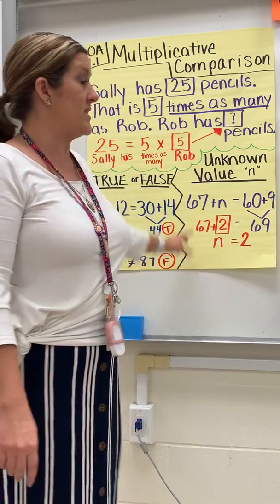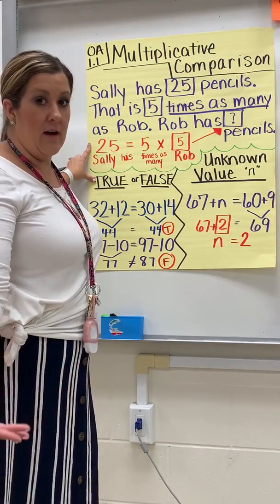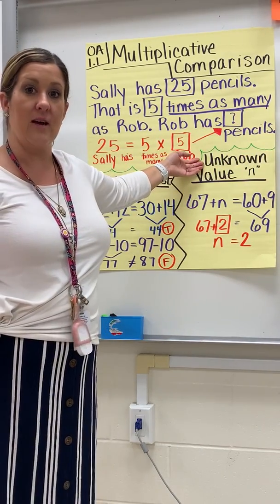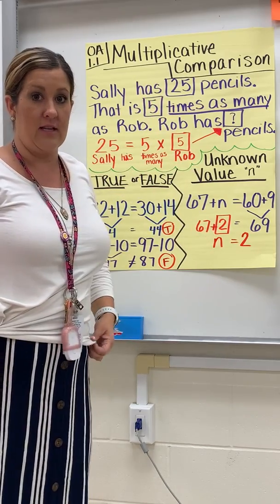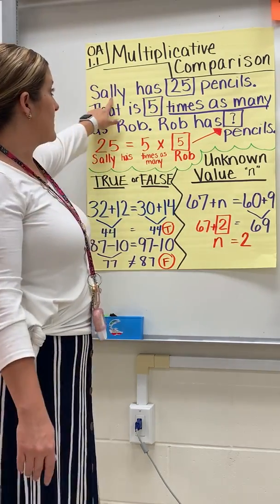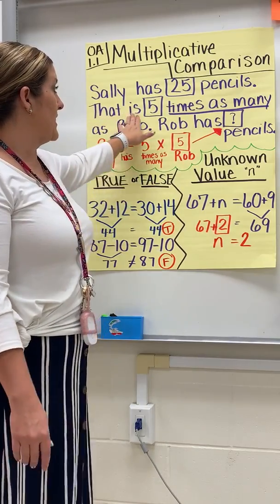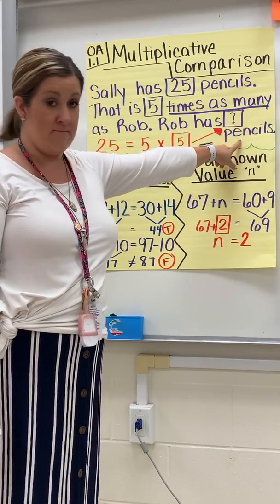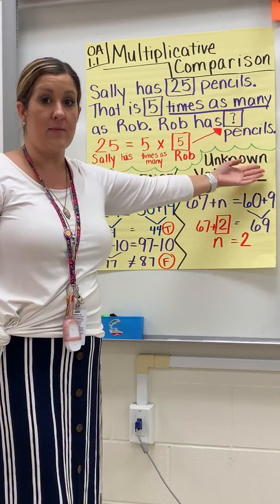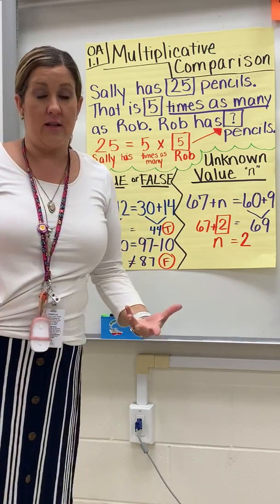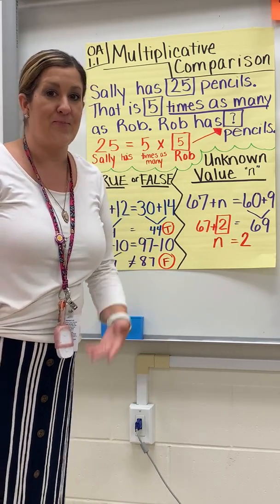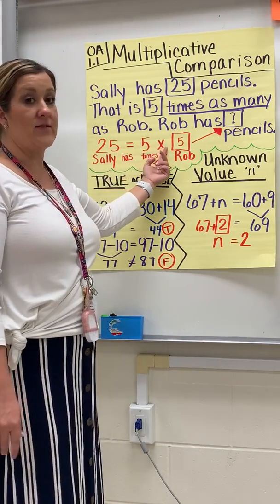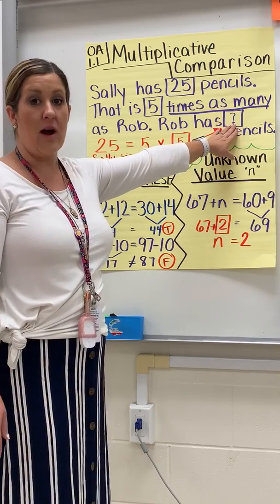Multiplicative comparisons are what I have here. We'll have a comparison situation, and then we'll have to create a multiplication equation to match the comparison. So this says Sally has 25 pencils — that is five times as many as Rob. So they have to answer how many pencils Rob has. Our multiplication equation would be 25 equals five times five, so Rob has five pencils.